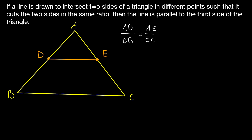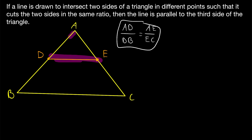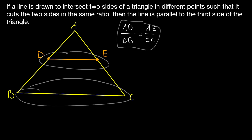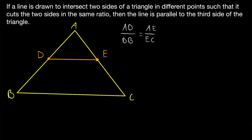So remember, with the basic proportionality theorem, we were given that these two sides were parallel, and the theorem tells us that as a result, this equality must be true. Now, we are given this equality — so this line cuts these sides in the same ratio — and we want to prove that DE is parallel to BC. This is our given information. This is a pretty straightforward proof, but it actually uses the basic proportionality theorem, so if you're not already comfortable with that, I'll leave a link in the description.